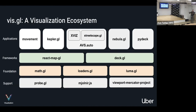The application layer includes Movement and Kepler GL — web interfaces that people can just visit and start using right away. The frameworks those applications are built on top of include react-map, which is a React wrapper around Mapbox's WebGL API, and deck.gl, which is our flagship visualization tech. At the foundation level there's math for linear algebra and geospatial math, and loaders.gl, which is a framework-agnostic way to load 3D data.